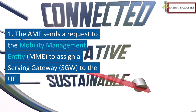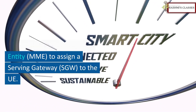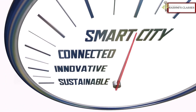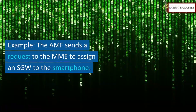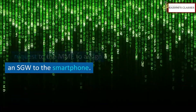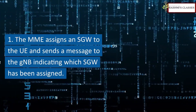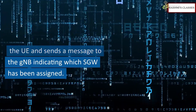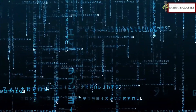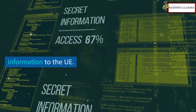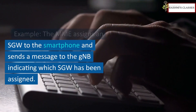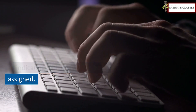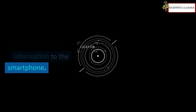The AMF sends a request to the Mobility Management Entity (MME) to assign a Serving Gateway (SGW) to the UE. The SGW is responsible for routing data packets between the UE and the Packet Data Network (PDN). The MME assigns an SGW to the UE and sends a message to the gNB indicating which SGW has been assigned, and the gNB forwards this information to the UE.